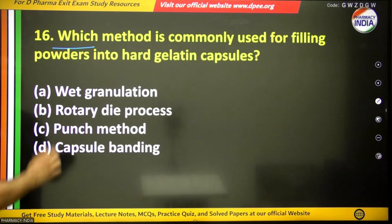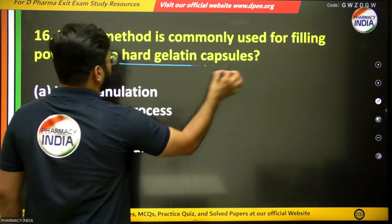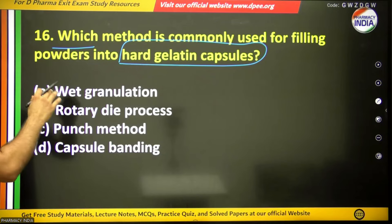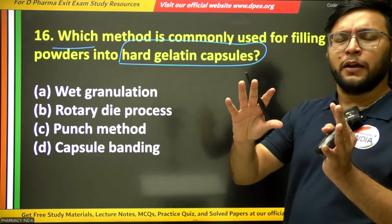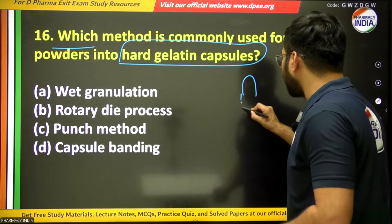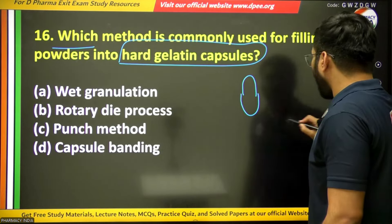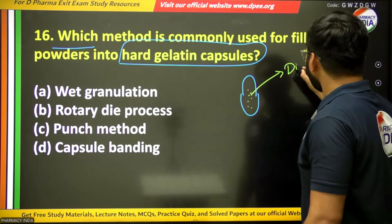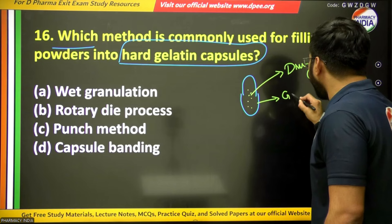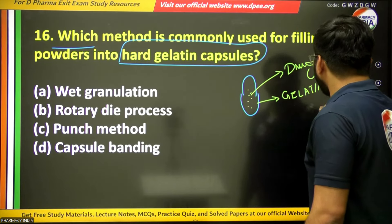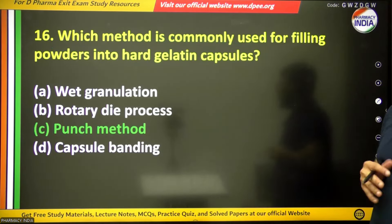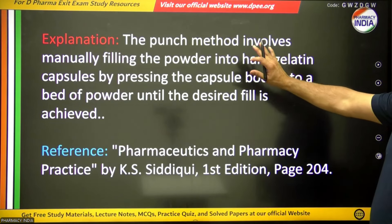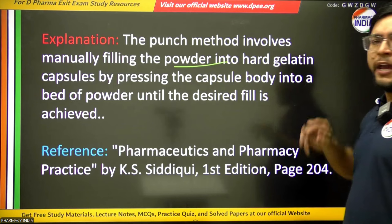The sixteenth question: which method is commonly used for filling powders into hard gelatin capsules? A hard gelatin capsule has a cap and a body, filled with drug, and is made up of two types of gelatin — Type A and Type B. The answer is the punch method — the punch method is mainly used to fill powder into hard gelatin capsules.